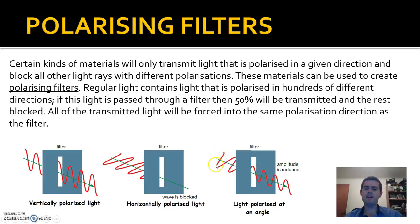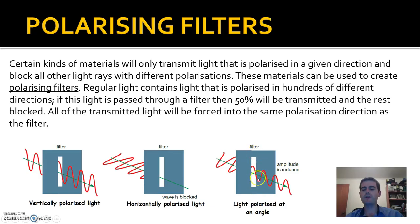Most of the time light is not all horizontally or vertically polarized — it's usually a mixture, polarized in many different directions. What happens in that case is that some of the light will get through, but not all of it. If you've got randomly polarized light, 50% will be transmitted through the polarizing filter and the other 50% will be blocked. Any light that does pass through will be forced into the same direction as the filter, so you'll get 50% of the original light, all polarized in the filter's direction.